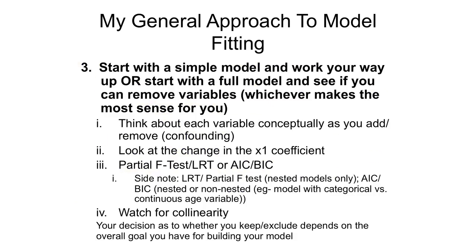Once you've gotten an overall feel for your data, my approach is generally to start with a simple model and work my way up by adding variables, especially for an effect size model. But you could also start with a full model and try removing variables, which might make more sense for a predictive model. Either approach is fine — the important thing is having a plan. Before you put anything in the model, you always want to think through conceptually, as you add or remove variables, especially with regard to confounding.